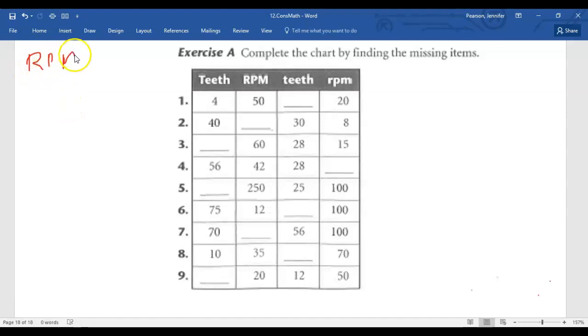That was the speed of the large gear, divided by lowercase RPM. That's the speed of the small gear. Equals lowercase t, teeth on the small gear, divided by capital T, teeth on the large gear.